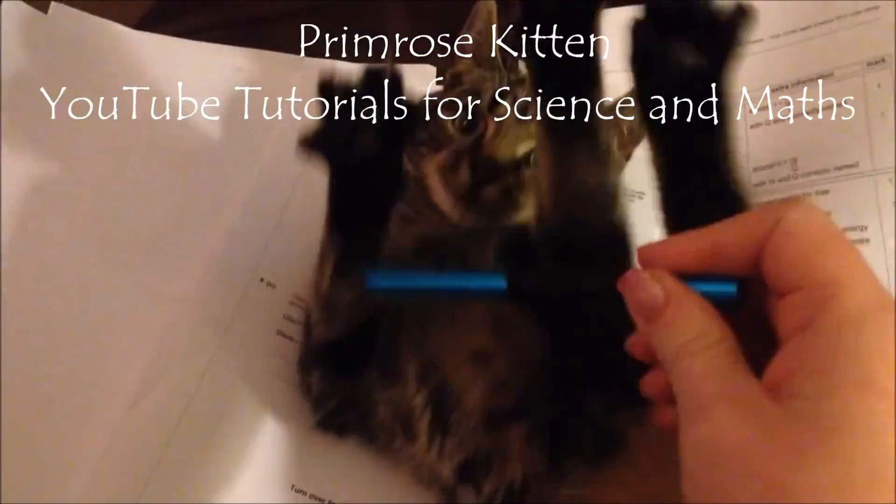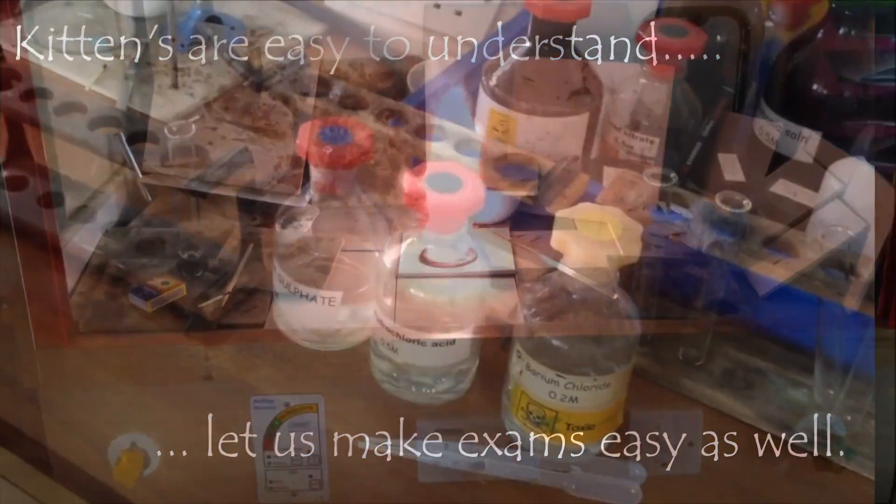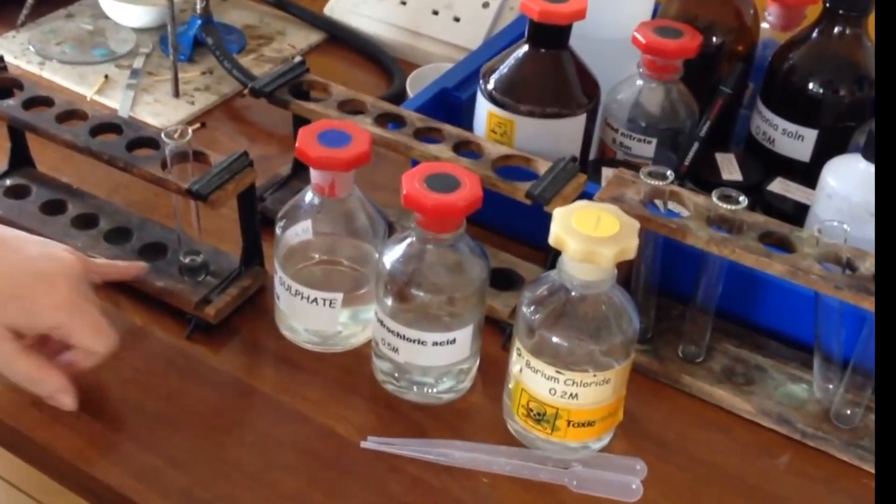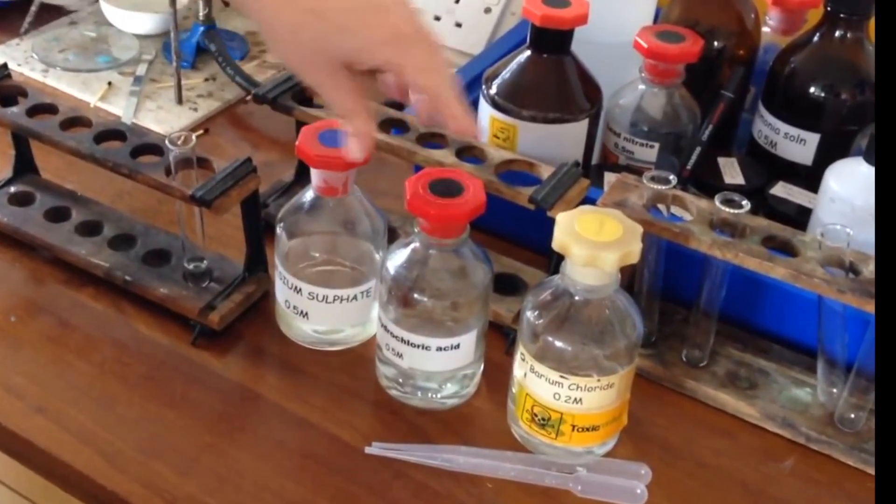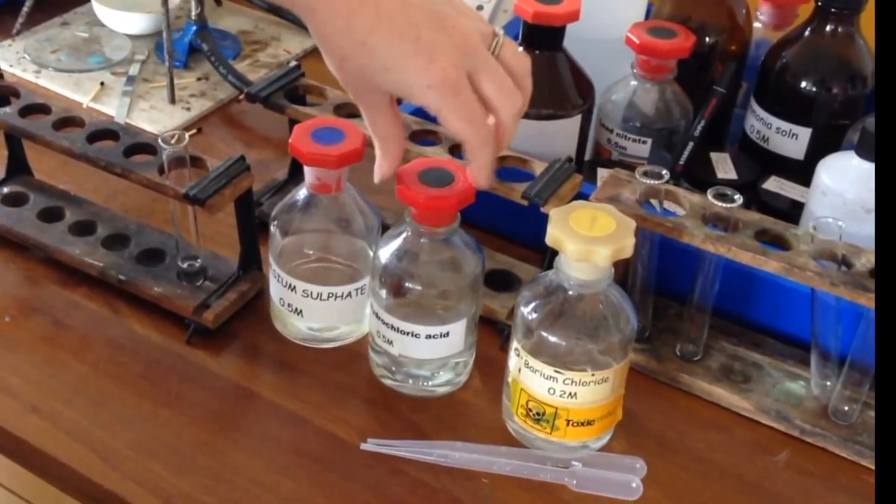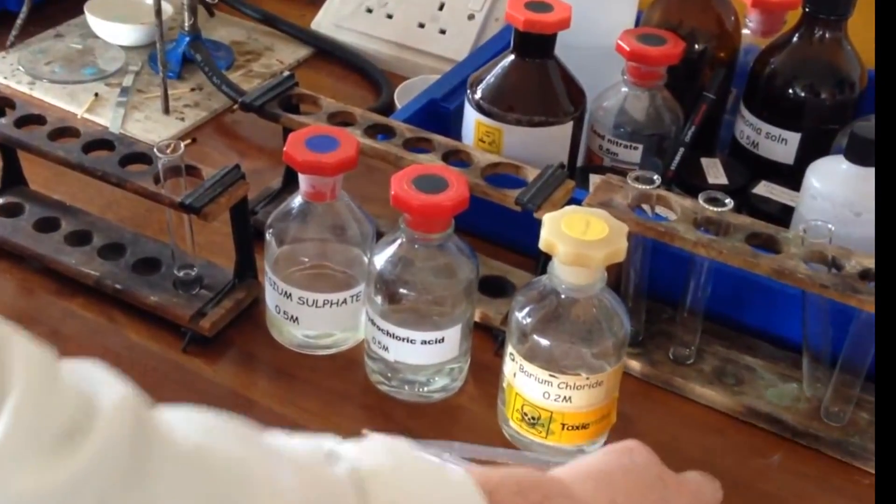Hey guys, in this video we're going to be going over how you test for sulfate ions. In here I have some magnesium sulfate. I'm going to add in sequentially hydrochloric acid and barium chloride.